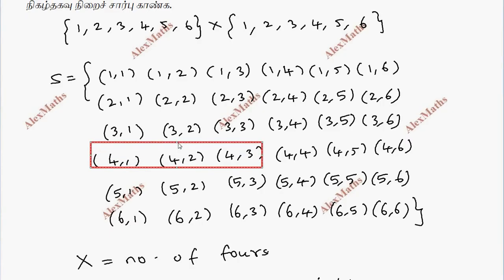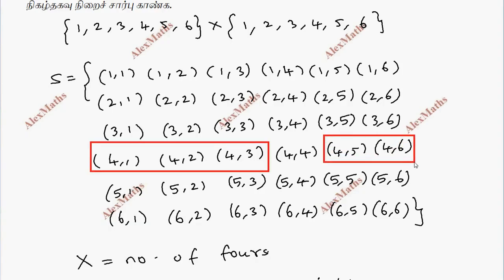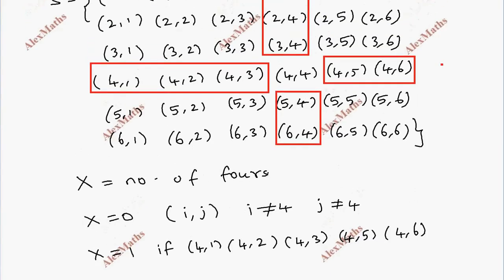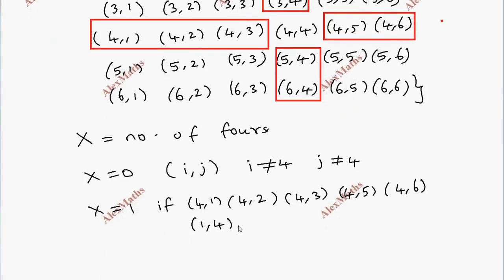When x equals 1, this means all outcomes with exactly one 4. From the events: (4,1), (4,2), (4,3), (4,4), (4,5), (4,6), (1,4), (2,4), (3,4), (5,4), (6,4). When x equals 2, we have (4,4) — that is two 4s.